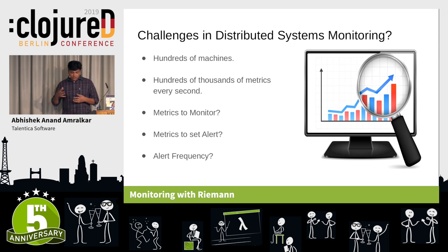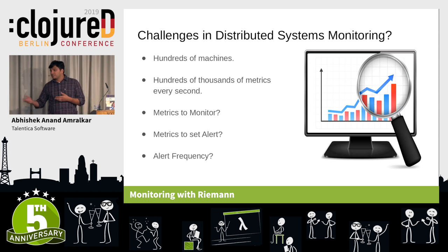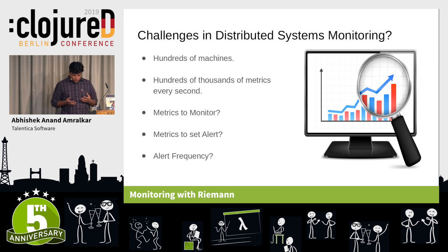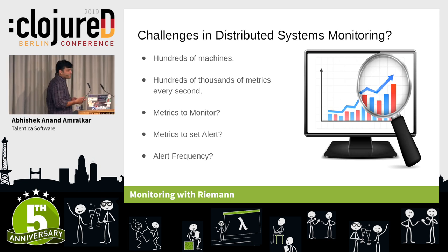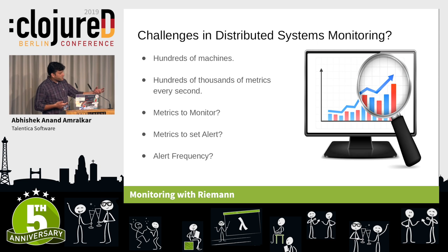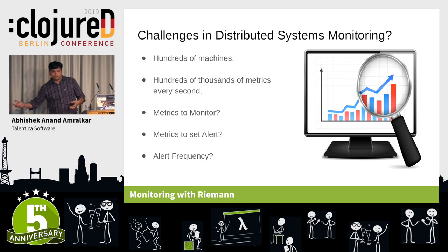All these hundreds of machines are emitting your metrics — I don't know how many metrics a distributed system emits. So every time the question arises: what metrics need to be monitored, what metrics do you set alerts on, and at what frequencies should you alert?